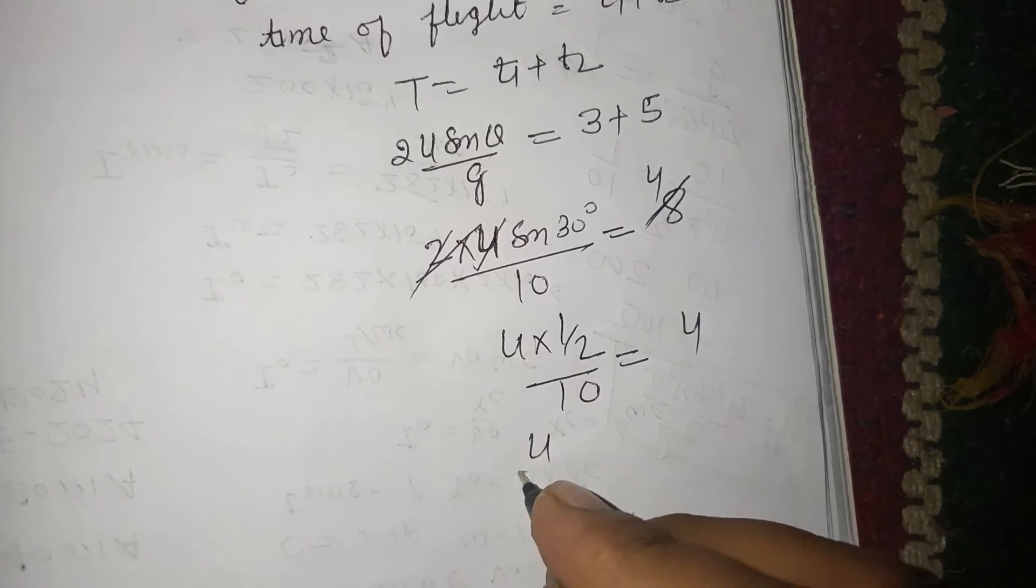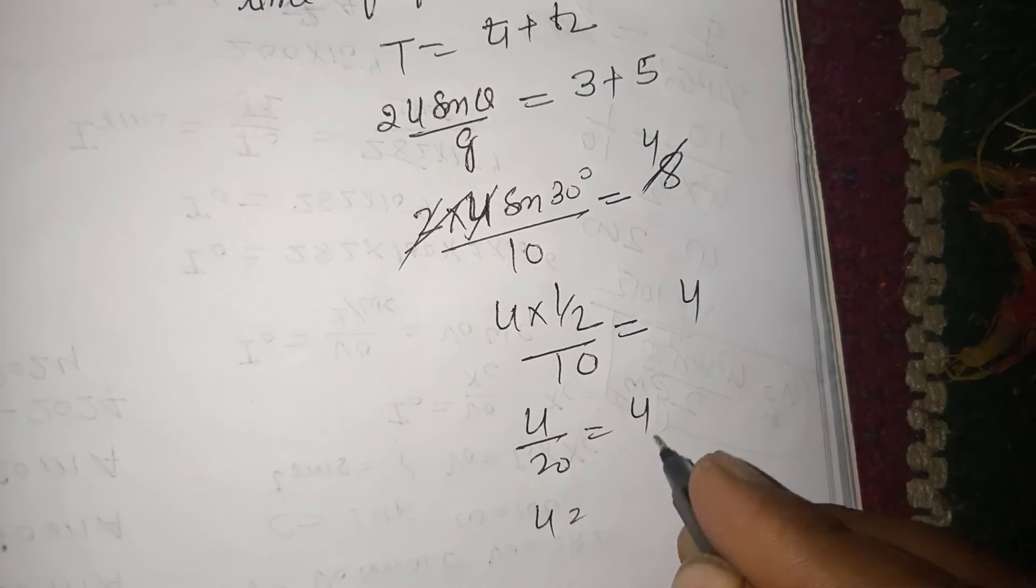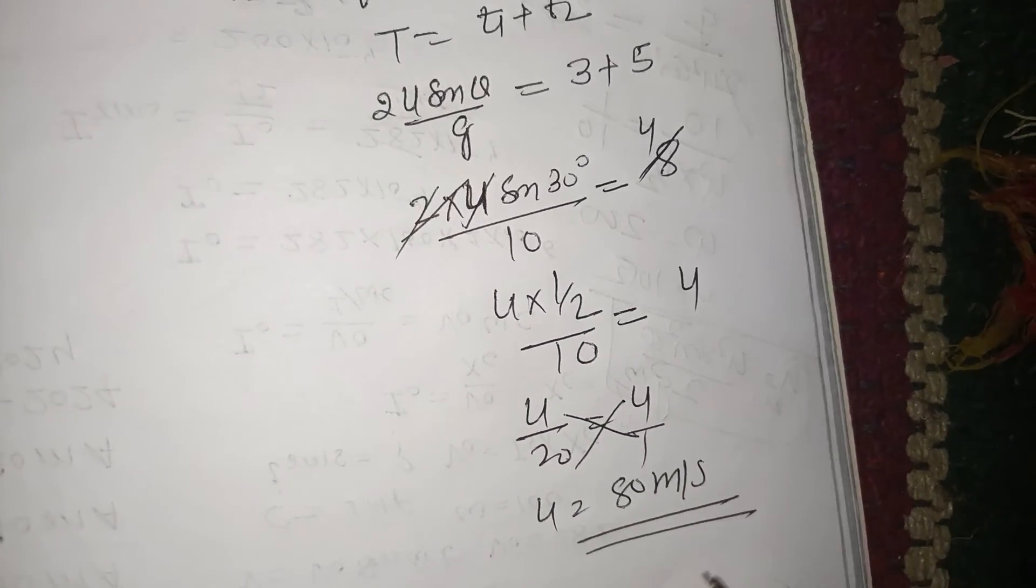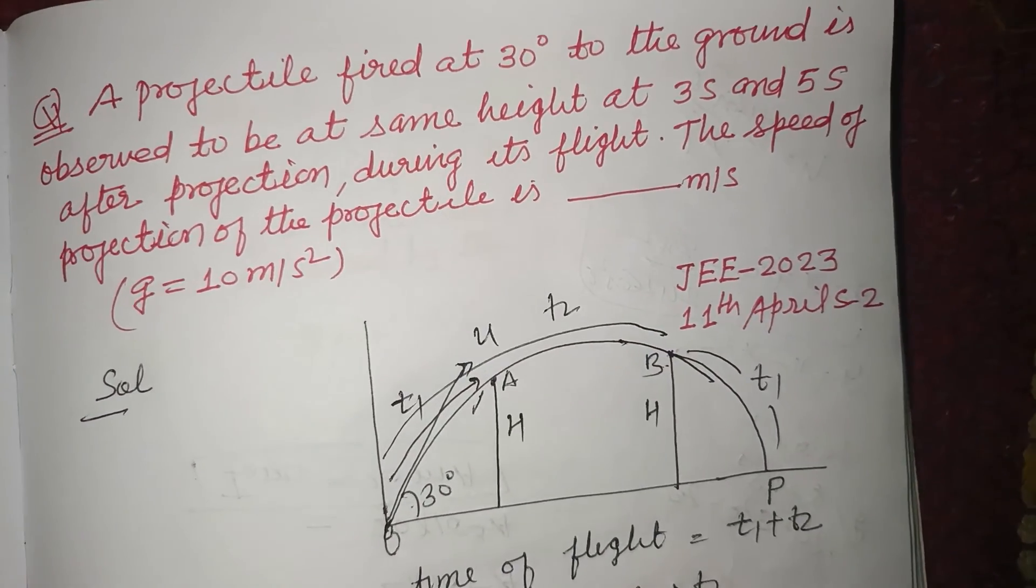So u equals 20 times 4, which is 80 meters per second. So 80 meters per second is the initial velocity of the projectile.